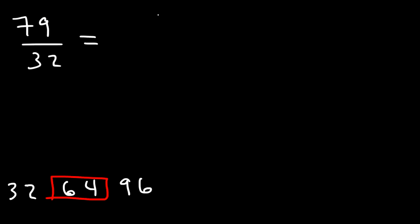So I'm going to break this into two smaller fractions, 64 over 32. And then to find the remaining fraction, take the difference of these two numbers. 79 minus 64.